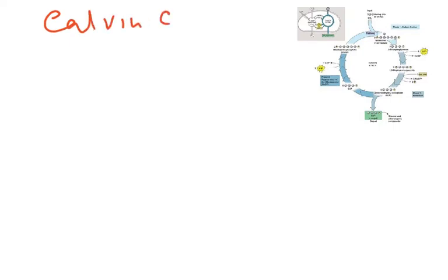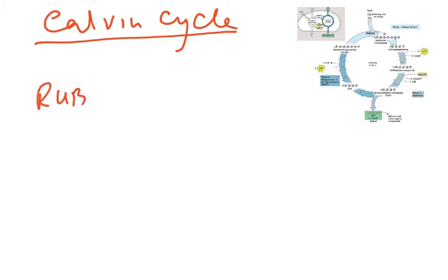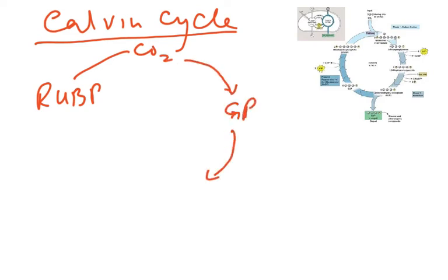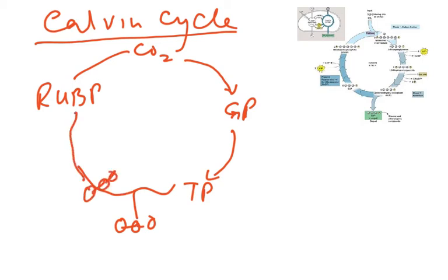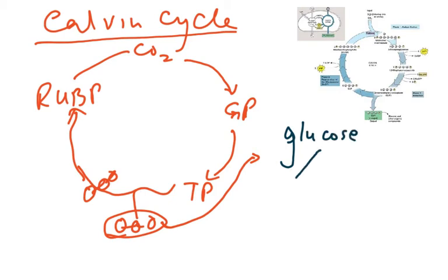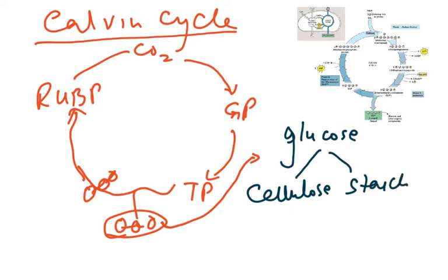Looking at a diagram from another book for the Calvin cycle: a quick recap — RuBP combines with CO₂ to form GP, then GP forms TP. A three-carbon molecule exits, and another three-carbon molecule remains, after which RuBP is regenerated. That exiting three-carbon unit results in the formation of glucose.